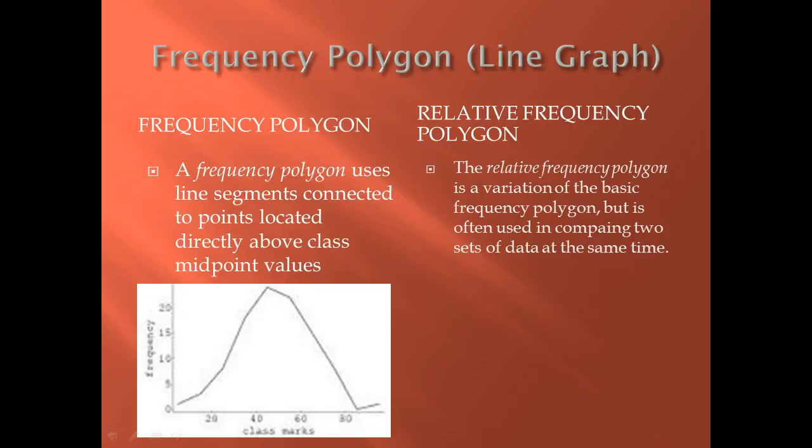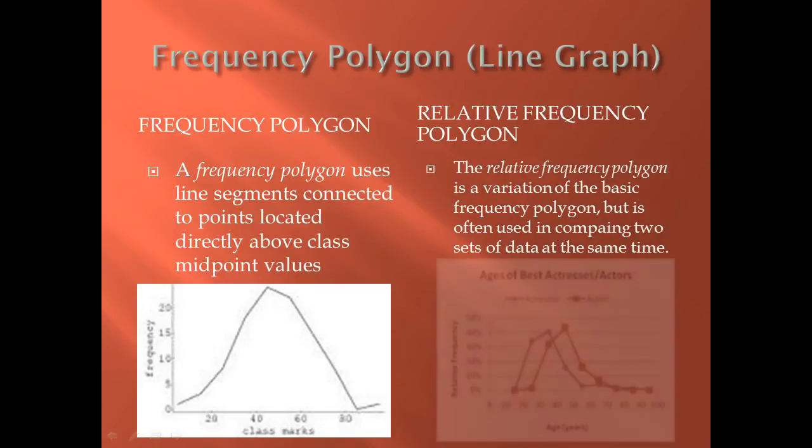The relative frequency polygon is what we'll use when we're trying to compare two things at once. The example you'll see on the bottom is ages of best actresses and actors. It could come from the Emmy or Grammy Awards, and we can easily compare them by using relative frequency with a percentage. There might be more actors than actresses, so it's important to use a percentage there.